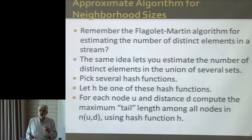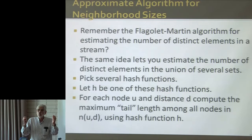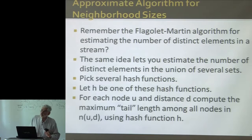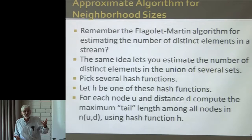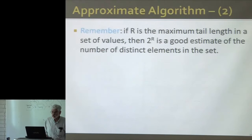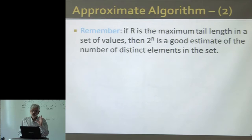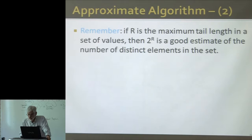You don't have to worry about eliminating duplicates. Each member of one or more of those neighborhoods contributes its tail length toward computing the maximum. It's exactly like the stream case, where it doesn't matter how many times the same element appears — it always contributes the same tail to finding the maximum. What do you actually hash? The node has a name or a number, and you'll hash it. The maximum tail length, which we call capital R, gives 2 to the R as the estimate of the size of a set from one out of, say, a hundred hash functions.